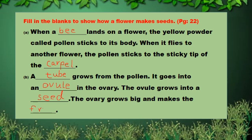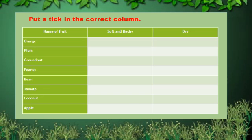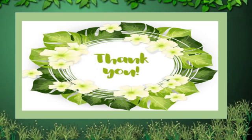Now students, put a tick on the correct column. Orange is soft and fleshy food. Plum is also soft and fleshy. Brown nut is a dry food. Peanut is also a dry fruit. Bean is also a dry fruit. Tomato is soft and fleshy. Coconut is a dry fruit. Apple is soft and fleshy. Okay students, Allah hafiz.